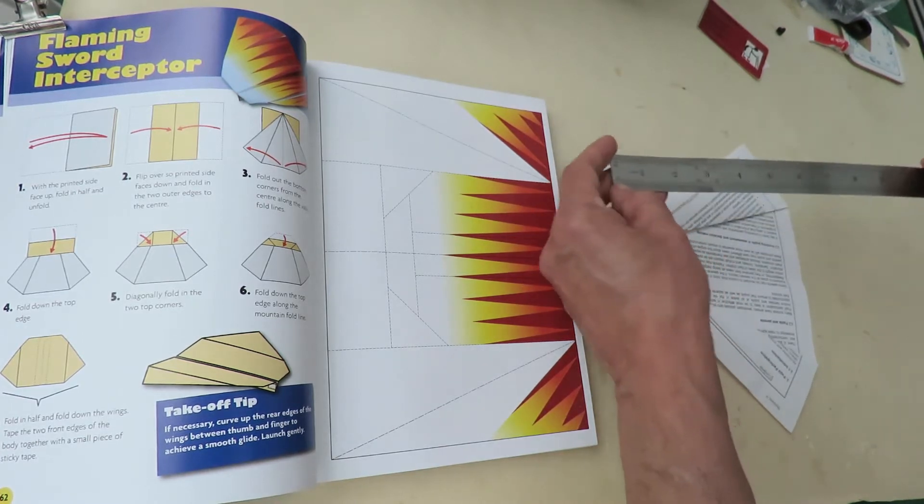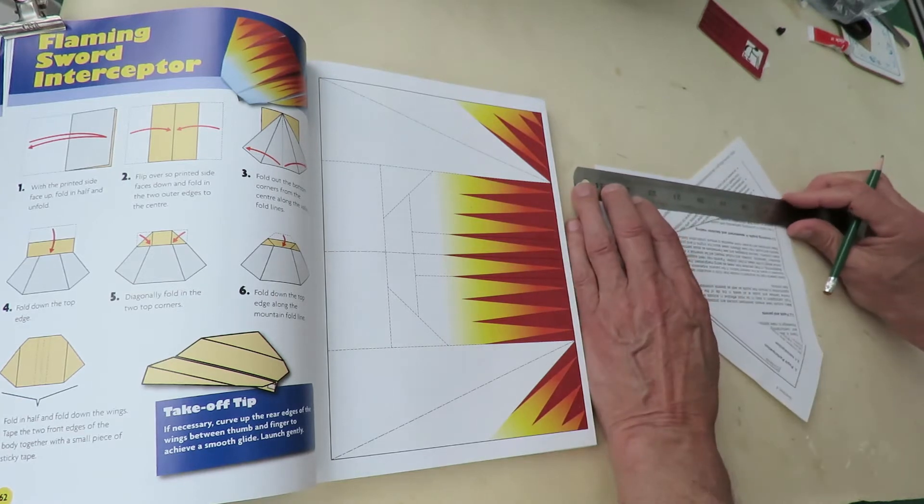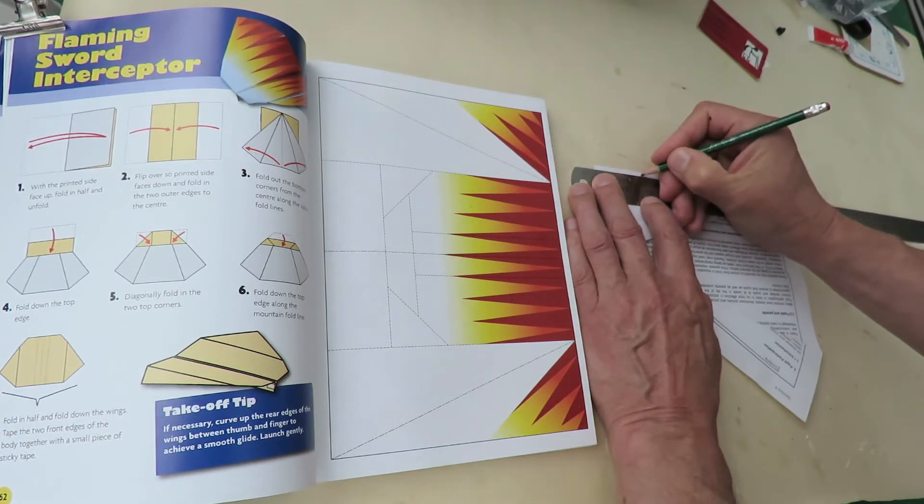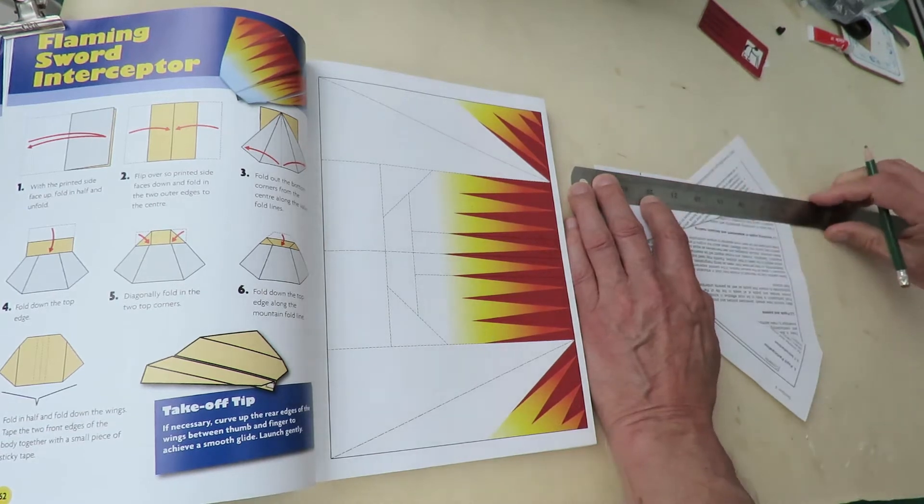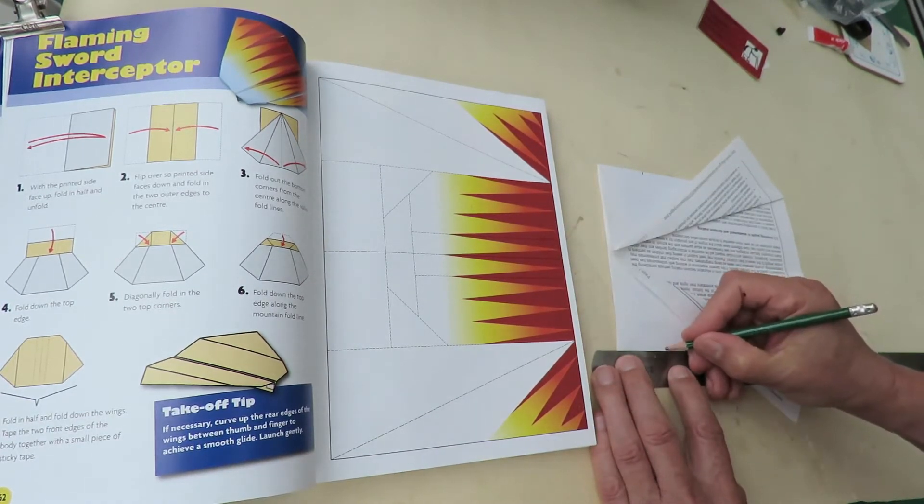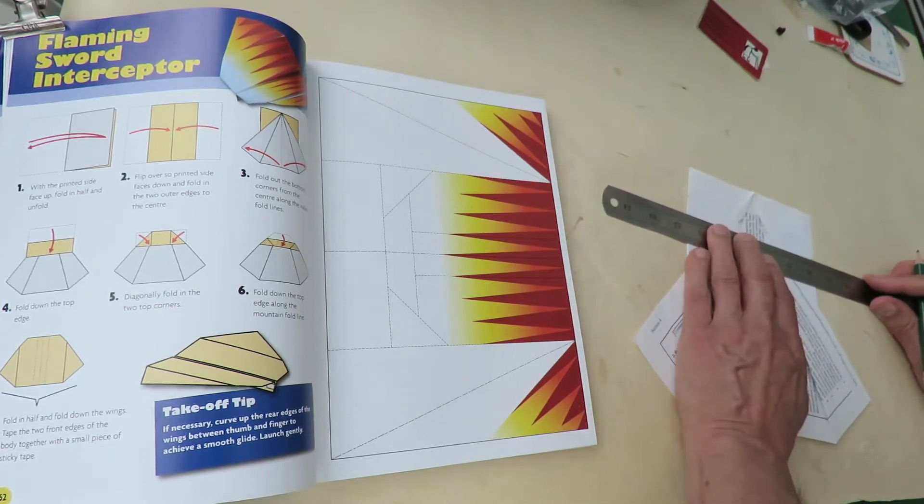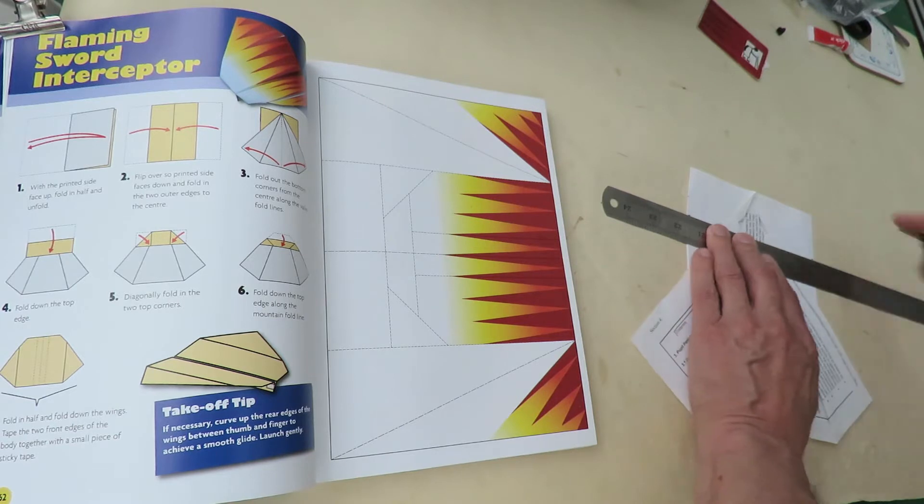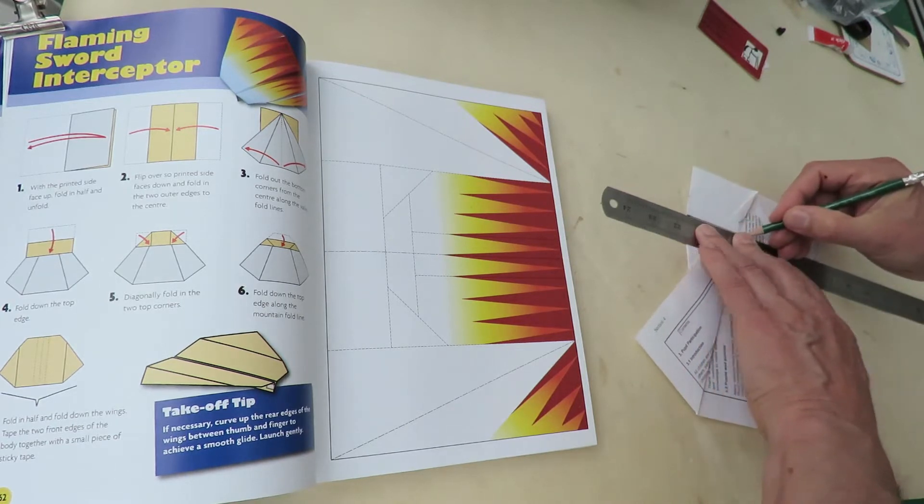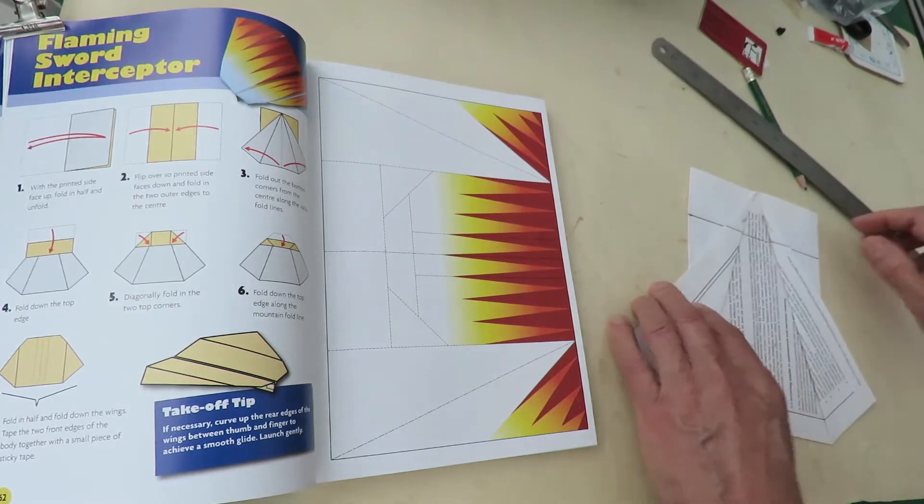Which we need, yeah, those measurements, one and three quarters. Draw the line across. That's our fold line.